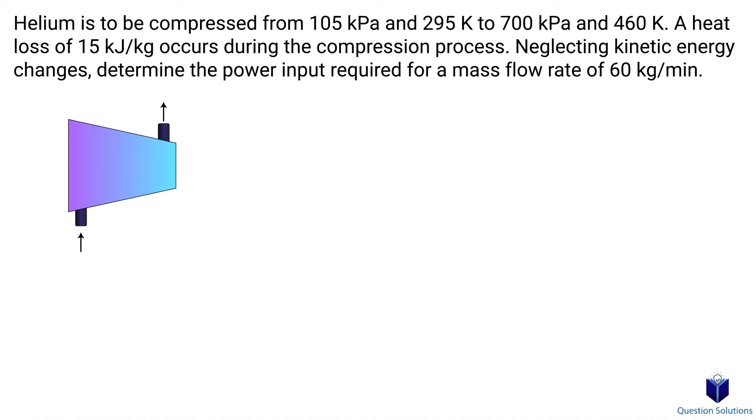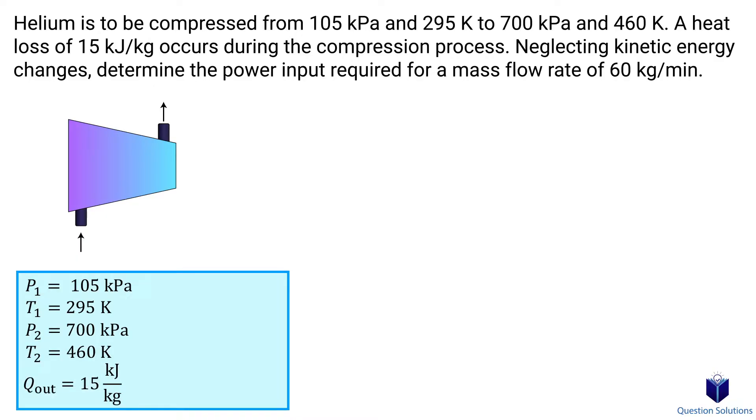In this problem, we have helium being compressed and we need to figure out how much power is required for this process. Let's write down what we know. The helium enters the compressor at 105 kPa with a temperature of 295 K and exits with a pressure of 700 kPa and a temperature of 460 K. There is a heat loss during this compression process, which is 15 kJ per kg and the mass flow rate is 60 kg per minute.